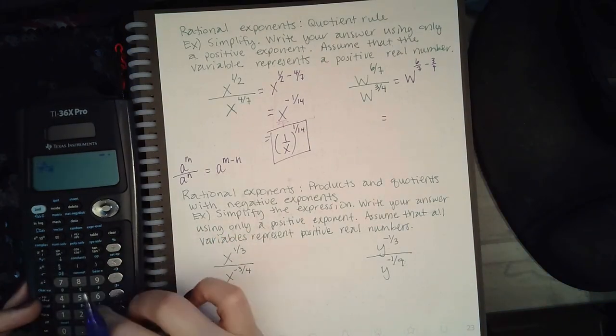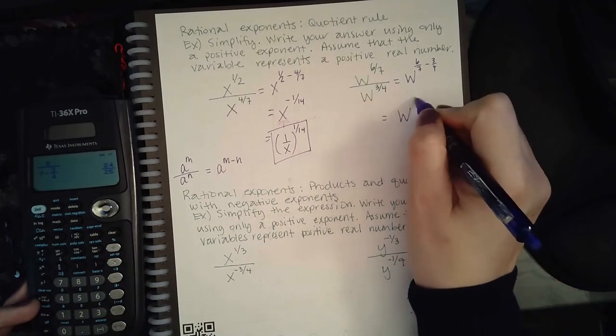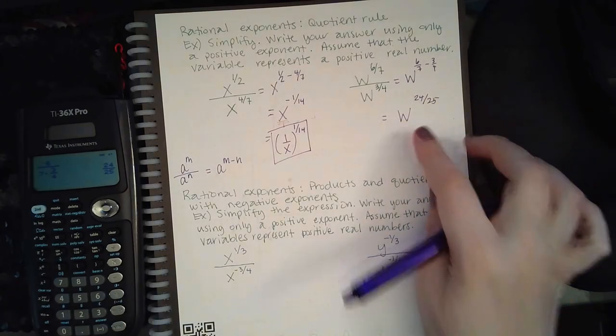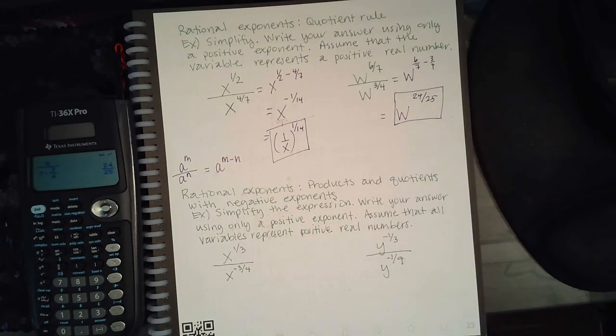So here we will do w to the 6/7 minus 3/4. So 6 over 7 minus 3 over 4 - oh there's something weird going on my problem - so 6 over 7 minus 3 over 4, and we get 24 over 28. Now this is positive, so I don't need anything with it. This is the final answer here.